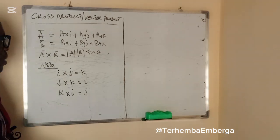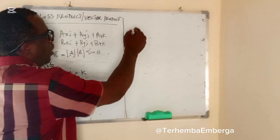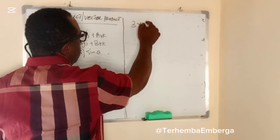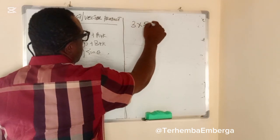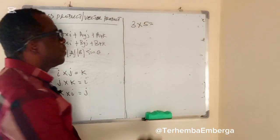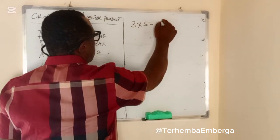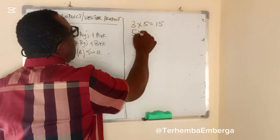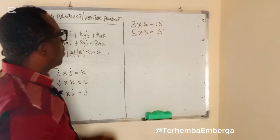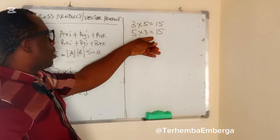Take for instance, if I say 3 multiplied by 5, the answer is 15. If I say 5 multiplied by 3, the answer is 15. No matter how I interchange the numbers, as far as multiplication is concerned, they will always give you the same result.